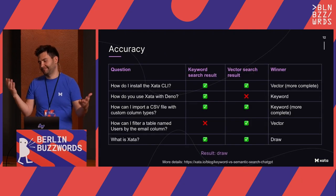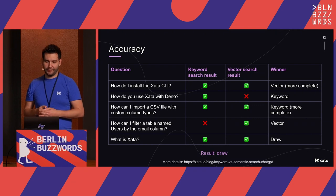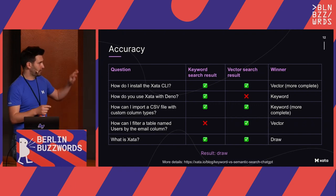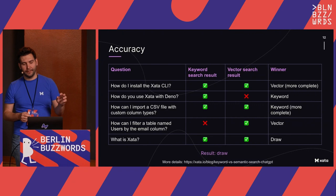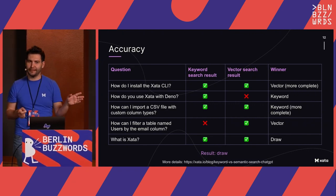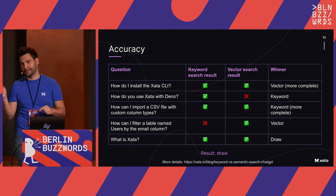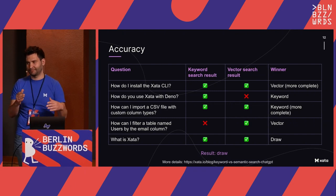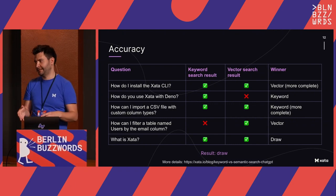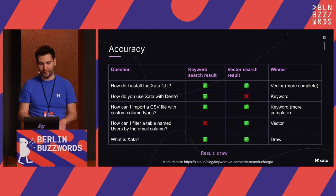When it comes to accuracy — the most important thing — we tried multiple questions, and there's a blog post with more of them. It's kind of a draw. Sometimes keyword search gets lucky and finds the correct page; sometimes vector search does better. In the end, it was a draw. If there was a big difference, we would have picked one or the other.